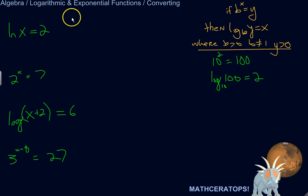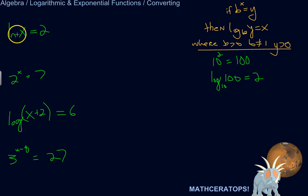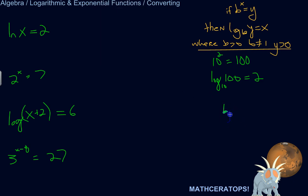So let's use this basic relationship to convert between logarithmic and exponential functions. If it's a log function, we'll convert it into an exponential function, and vice versa. Note that ln means natural log, and that is log base E. If it just says log with no base, you can assume that it means log base 10.